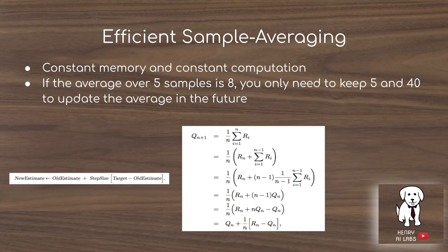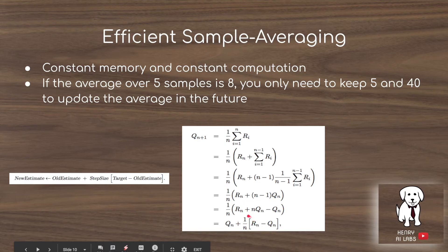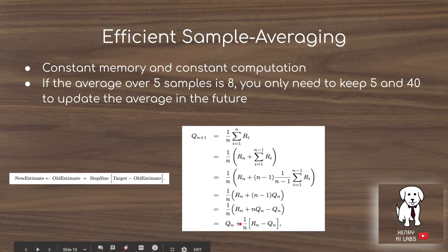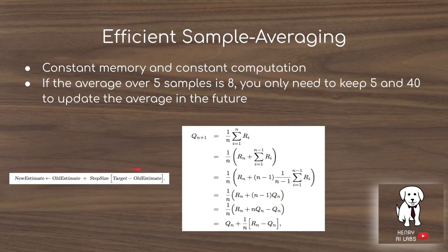Efficient sample averaging uses constant memory and constant computation to estimate average returns. For example, if the average over five pushes of the green button is 8, you only need to store n=5 and the current average of 8 to update it. The update rule is: new estimate = old estimate + (1/n) * (target − old estimate). With a new sample of 12 and n=6, we get 8 + (1/6)*(12−8) = 8 + 2/3, giving the new average.